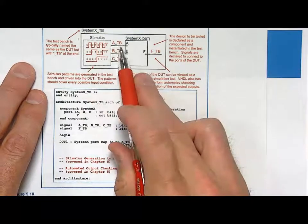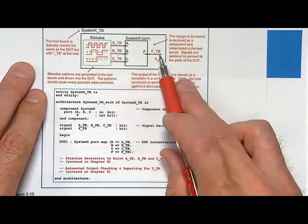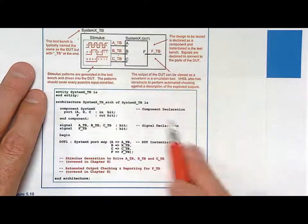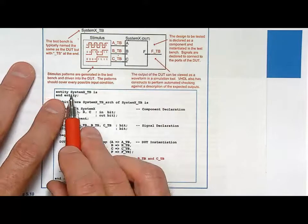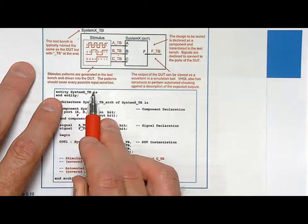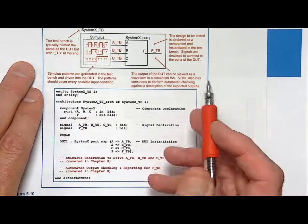And we connect those to the system, the DUT, and then we look at the output. So, there is no inputs and outputs on the test bench. So, if you look at the entity declaration, it's simply entity system X test bench is end entity. And that's it. There are no ports.